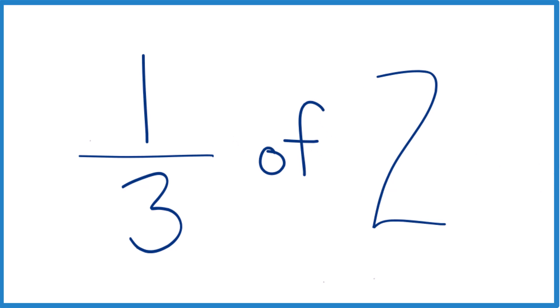The first thing to do is to think of one-third of two, not as of, but as multiplication: one-third times two. So one-third times two is the same as one-third of two.